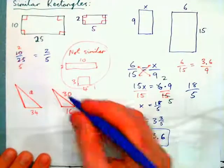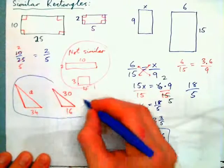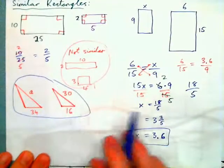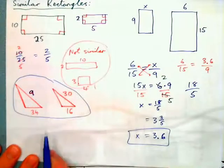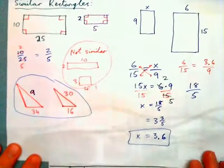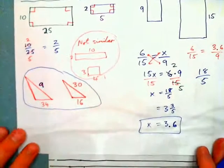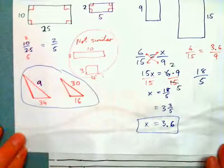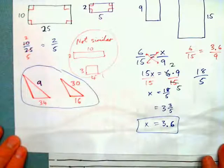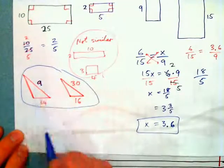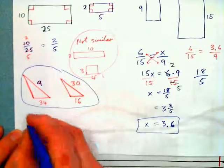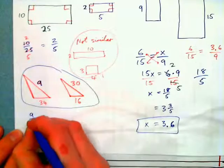Now go ahead and do this example. You've got two similar triangles and you've got to find the length of the unknown side. Press pause and solve. We're solving for side A. Since they're similar, A over 34 equals 30 over 16.